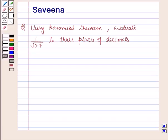Hello and welcome to the session. In this session we will discuss a question which says: using the binomial theorem, evaluate 1 over root 0.7 to 3 places of decimals.